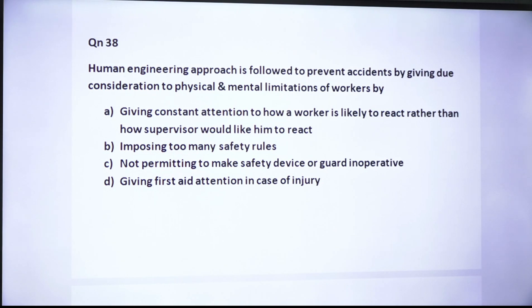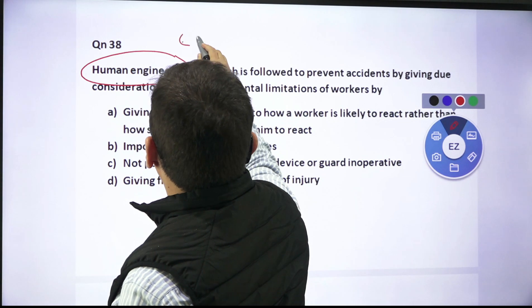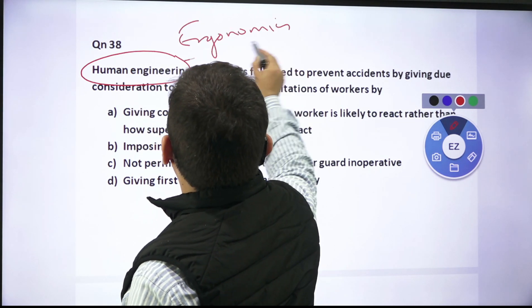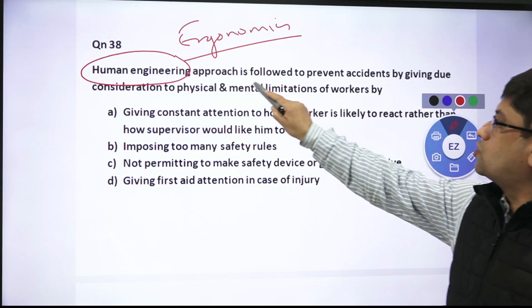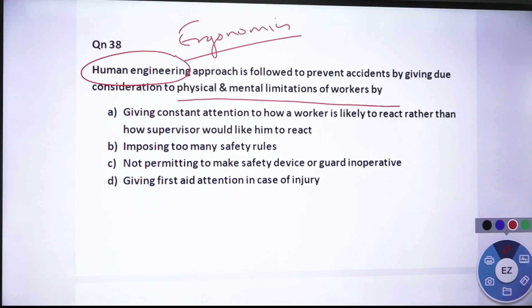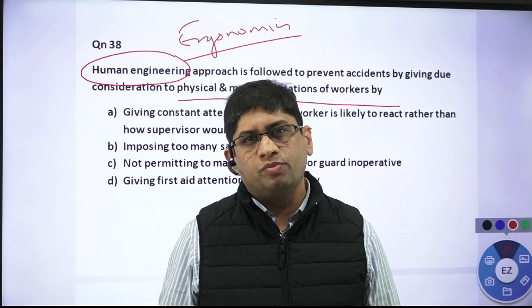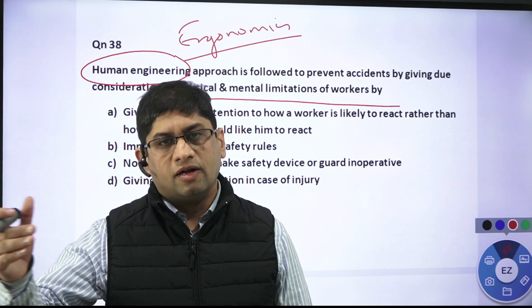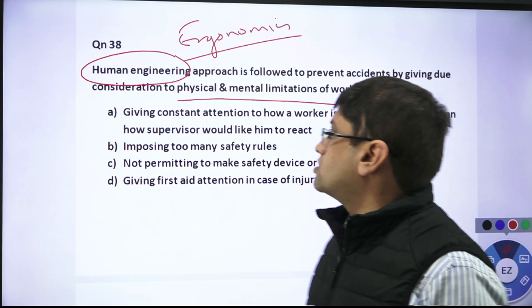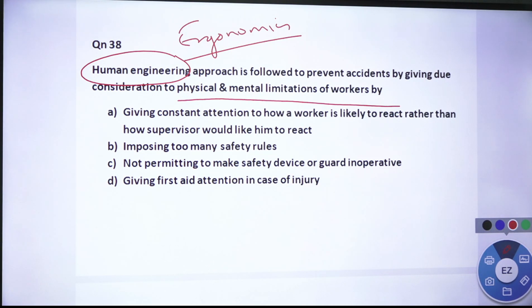The third question is on human engineering. Human engineering is also called ergonomics. The ergonomics approach is followed to prevent accidents by giving due consideration to the physical and mental limitations of workers. The question asks: which of the following four options best describes this approach? The choices include: giving constant attention to how a worker is likely to react rather than how a supervisor would like him to react; imposing too many safety rules; not permitting safety devices or guards to be made inoperative; and giving first aid in case of injury.